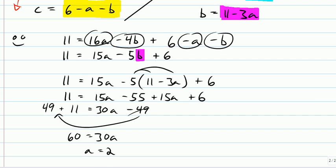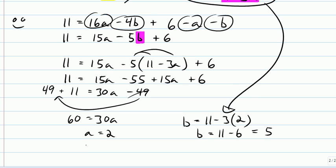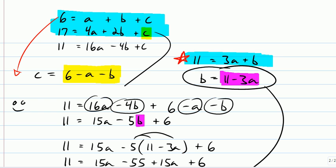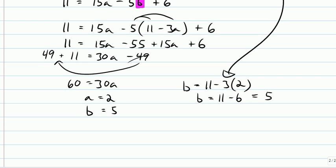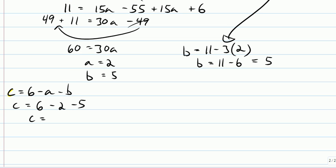And if a equals 2, go back here. If a equals 2 and b is 11 minus 3a, that means b equals 11 minus 6, which is 5. So I know a and b, a is 2, b is 5. Now I'm going to scroll back through my work and I'm going to see, is there any equation that I have? If I know a and b, I can find c. Yes, it's right here. It's got the yellow in it. It says you can calculate c if you know a and b. c is 6 minus a minus b. c equals 6 minus a minus b. c equals 6 minus 2 minus 5. c equals 6 minus 2 is 4, 4 minus 5 is negative 1.